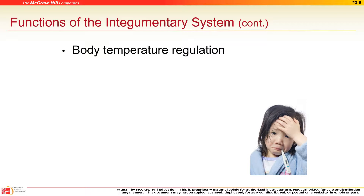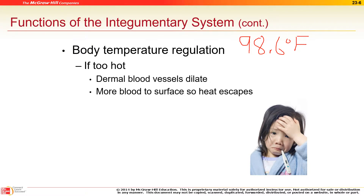Normal body temperature is about 98.6°F, and we regulate it through the skin in a couple of ways: hair, fat, and blood vessels. If it's hot, blood vessels open to dissipate heat — they bring heat to the surface of the skin so it can escape.